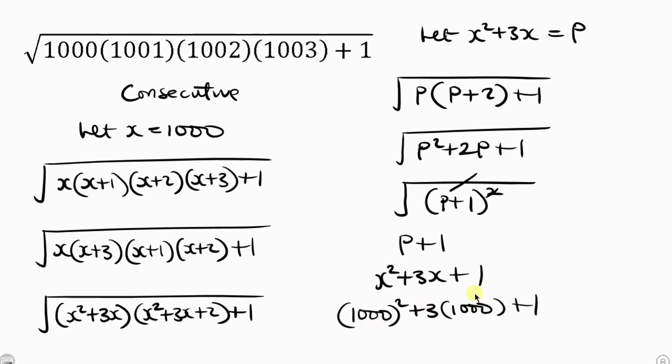So 1000 squared, we have 1 million. So we have 1 million plus 3 times 1000 is 3000 and then plus 1. So adding this together, I'm going to be having 1 million and 3001, and there you have it.